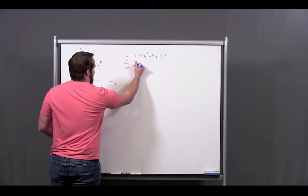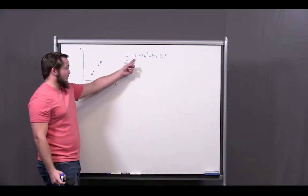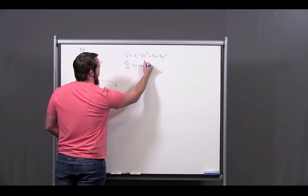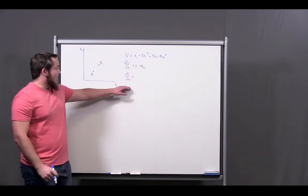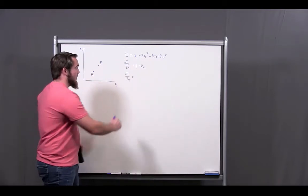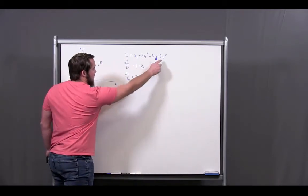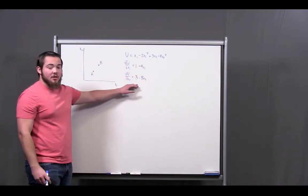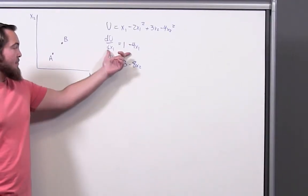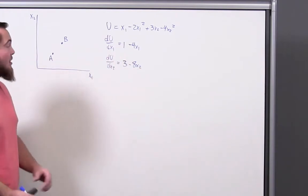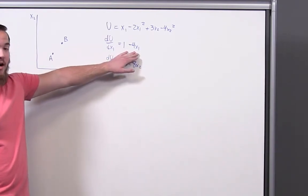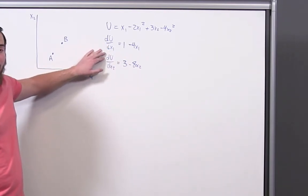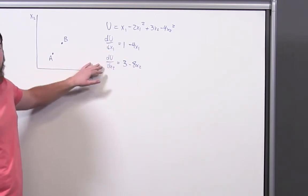Let's go ahead and take the first order conditions of these to see if it's monotonic. So, I have my du dx1, derivative of this is 1, bring the 2 down, minus 4x1. For x2, I'm going to have a 3 minus 8x2. So, what I see here is that these values won't always be positive. Because once my x1 gets high, or my x2 gets higher, we'll start to see negative values for du dx1 and du dx2.